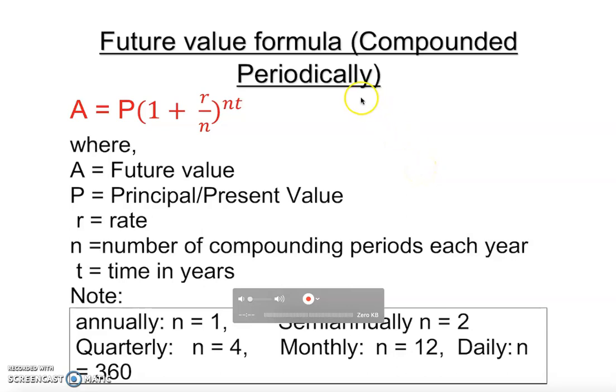Let's talk about the future value formula compounded periodically. We're going to find a future value, something we'll accumulate in the future, but periodically - like monthly, daily, annually, or semi-annually. Let's take a look.